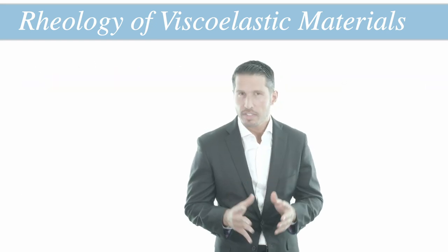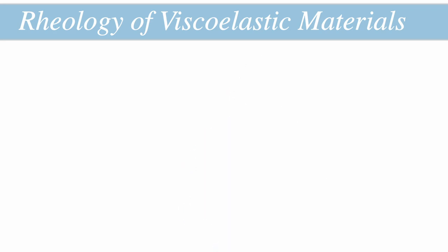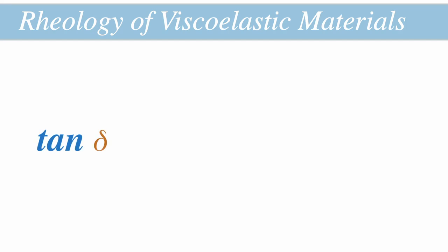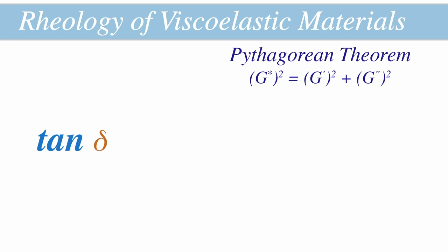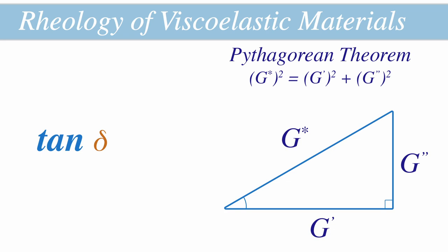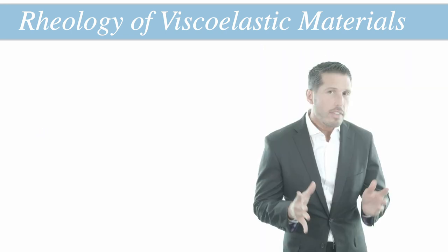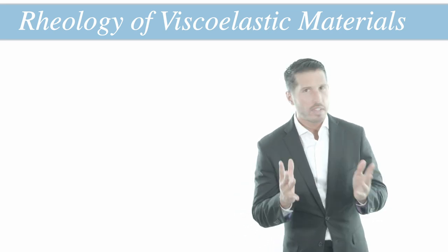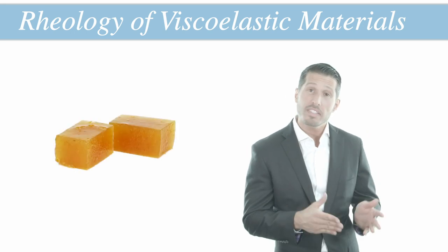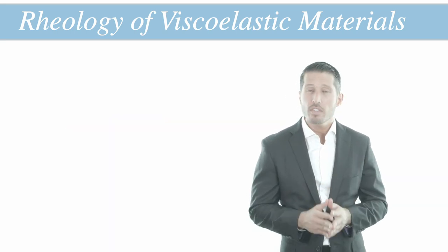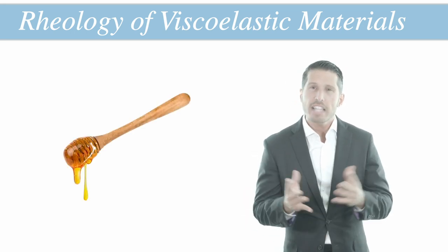An even more useful way to describe the viscoelasticity of a gel is through the ratio of G double-prime to G prime. This ratio is known as tan delta because of how these rheological measurements are governed by the Pythagorean theorem. The relationship between the complex modulus and the storage and loss moduli is that of the three sides of a right triangle, with the complex modulus being the hypotenuse. It naturally follows that the tangent of the angle delta is equal to the ratio of the opposite side over the adjacent side — G double-prime over G prime — hence why this ratio is called tan delta. If tan delta is less than 1, then the material is more elastic than viscous, acting more like a block of gelatin. If tan delta is greater than 1, then the material is more viscous than elastic, acting more like honey.